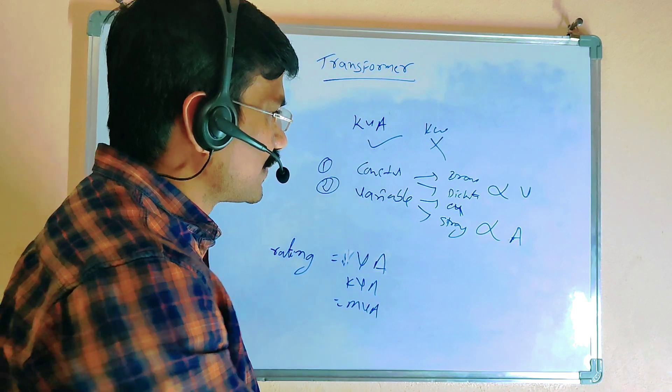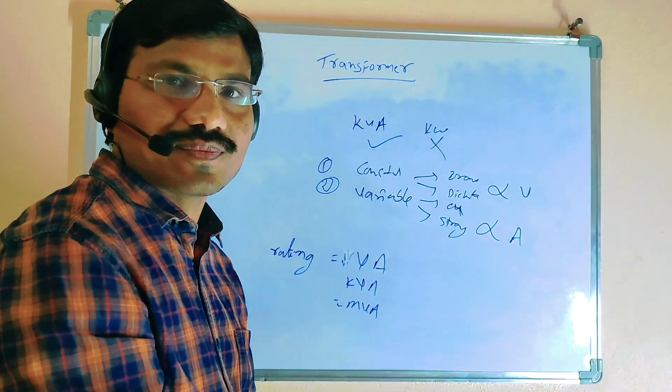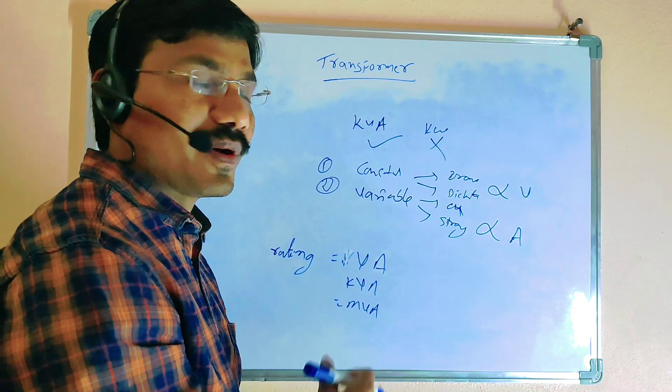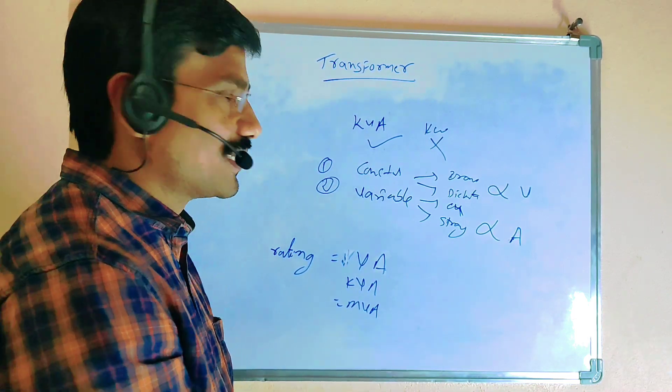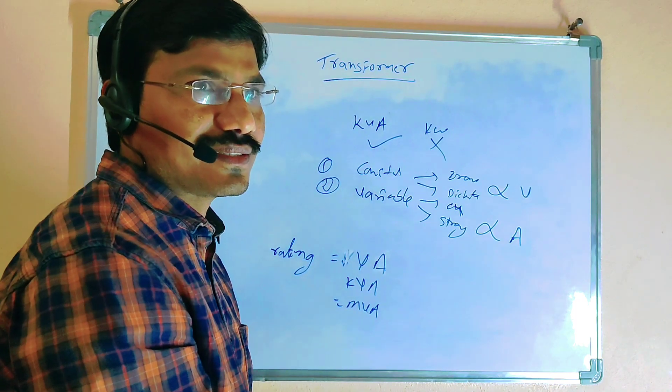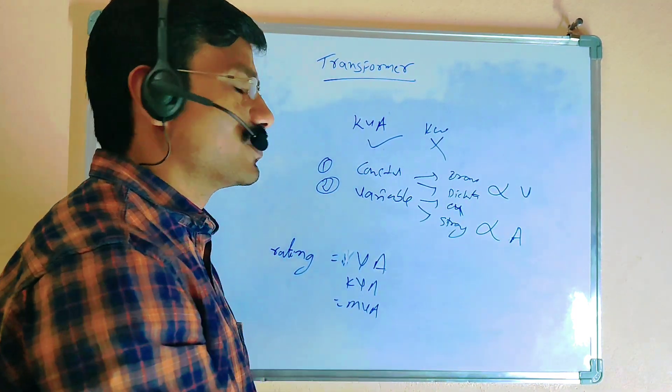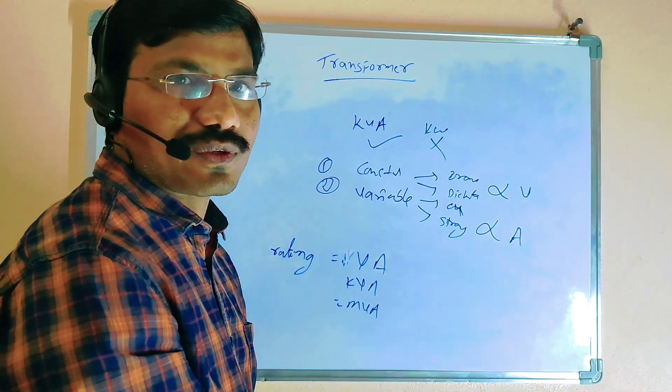If you go for variable losses - copper losses and stray load losses. The transformer is already made, but the load is varying. If it's running 30% of load, that corresponding losses. If it's running 50% of load, that corresponding losses will come. If it's running 90% of load, that corresponding losses. The losses vary based on load.